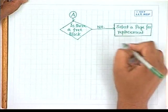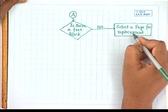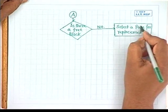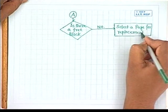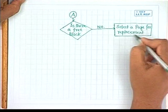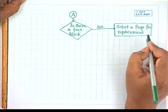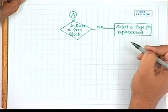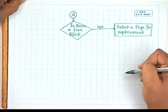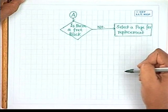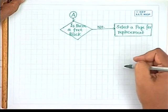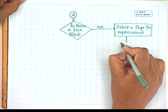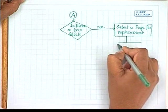Once you select a page for replacement, you must adjust the page map table of the job from which the page has been selected, because now the PMT of that job has to be modified. Earlier, this page was present in the main memory; now we are removing it, so the corresponding interrupt bit in the PMT has to be set. The next operation is to adjust the page map table.